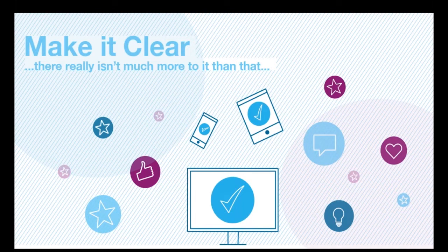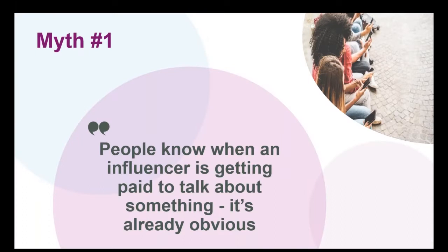Just make it clear. There really isn't much more to it than that. We've seen a lot of misinformation spread throughout the influencer marketing community and plenty of misunderstandings about what the requirements are, but at its very core it's just making clear when you're advertising. Rather than just reading out the influencer's guide to you, I thought I'd try a different approach and see if I can dispel some of the myths around ad labeling and disclosure.